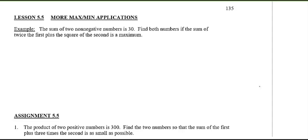One more example to finish off unit five. So just like lesson 5.4, we've got to do all those steps — find the variables, come up with the primary and secondary equation, domain, then take the derivative and so on. The problem: the sum of two non-negative numbers is 30. Find both numbers if the sum of twice the first plus the square of the second is a maximum.